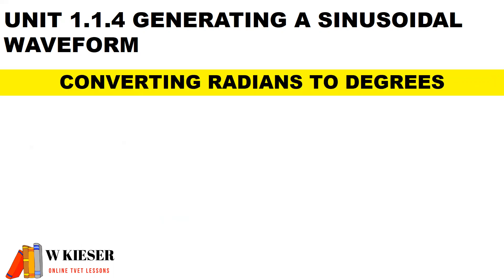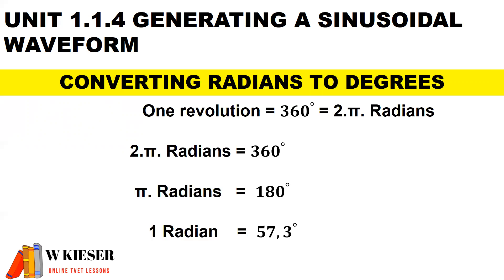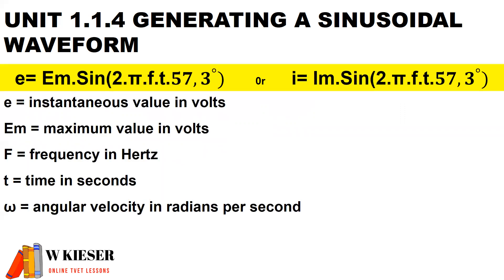Before the next equation, we need to convert radians to degrees. One revolution equals 360 degrees, which equals two pi radians. Simplifying: 180 divided by pi gives one radian equal to 57.3 degrees. To convert radians to degrees, always multiply by 57.3. In the following equation: E is the instantaneous value in volts, Em is the maximum value in volts, f is frequency in hertz, t is time in seconds, and omega (ω) is angular velocity in radians per second.